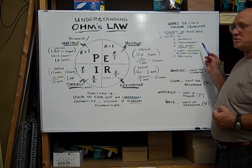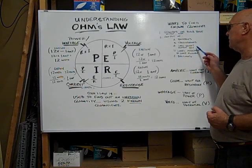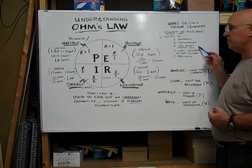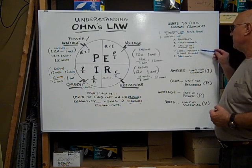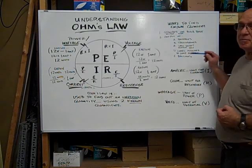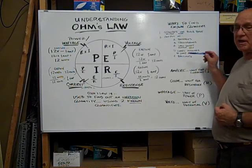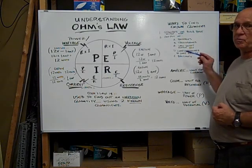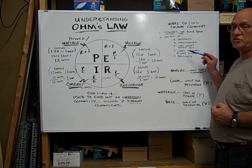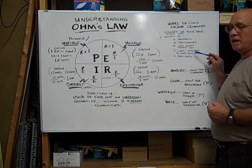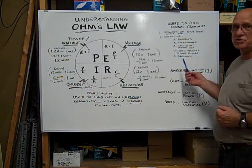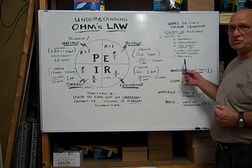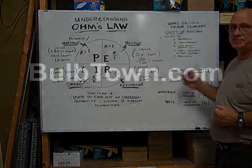The United States wall socket output is 110 volts. There's sometimes a label attached to the lamp fixture that will give you the voltage output as well as the amps. And also on ballast, you'll have voltage and amps.